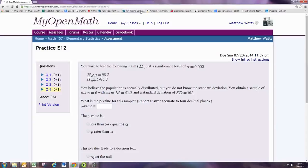The alternative hypothesis is that the population mean is greater than 85.3. The null is that it is equal to 85.3. You believe the population is normally distributed, but you do not know the standard deviation. You obtain a sample of size n equal to 6 with a mean 91.2 and a standard deviation of 16.1.